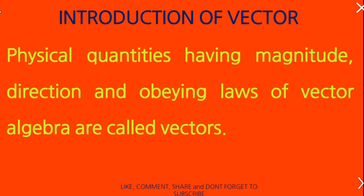Such measurable quantities are said to be physical quantities. There are some parameters like fear, happiness, or sweet which you cannot measure — there are no measuring instruments available. So, any physical quantities having magnitude, direction, and obeying laws of vector algebra are called vectors.